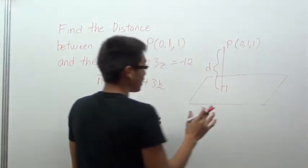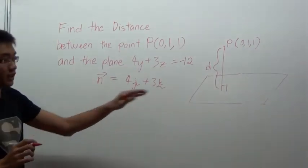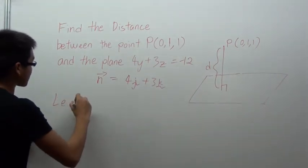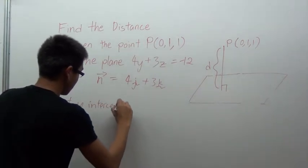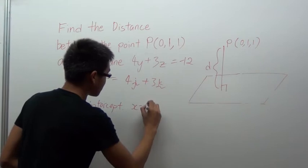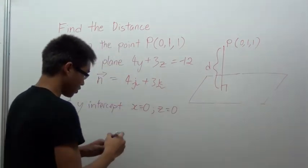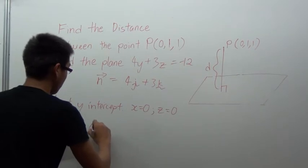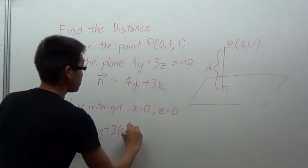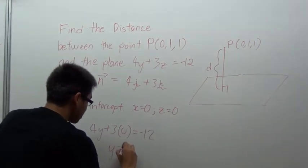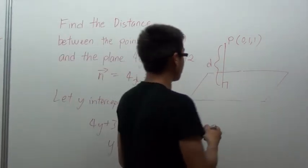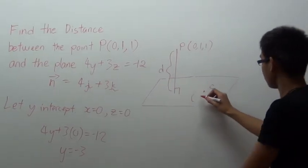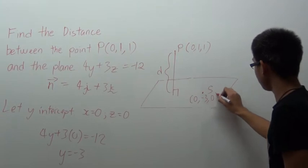Now after we found the normal, we have to find any point on the plane so that we can find the distance — let's call it point S. The easiest way is to use the intercepts. Let's use the y-intercept. At the y-intercept, x = 0 and z = 0. Substituting both values into the equation of the plane, we get 4y + 0 = -12, which makes y = -3. So the coordinates of point S are (0, -3, 0).